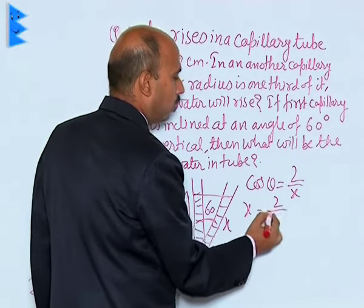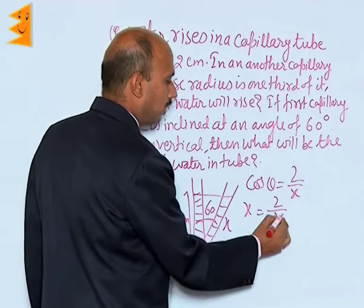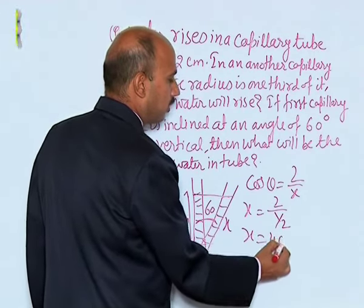So x is equal to 2 upon cos 60, that is 1 by 2. So x is equal to 4 centimeters.